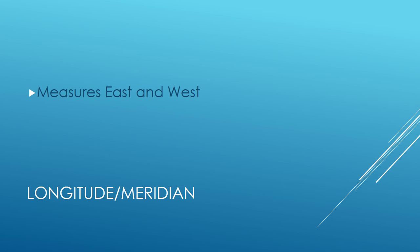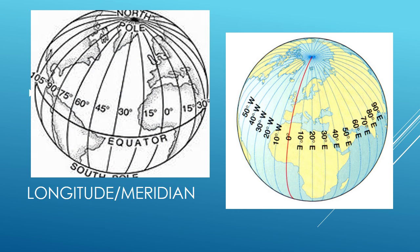Your next term is longitude. These lines measure east and west and are also known as meridians. You can see the north pole at the top and the south pole at the bottom, and they run long ways down the globe. All longitude lines are the same length and they're all very long, compared to latitude lines which got smaller as they got closer to the poles.